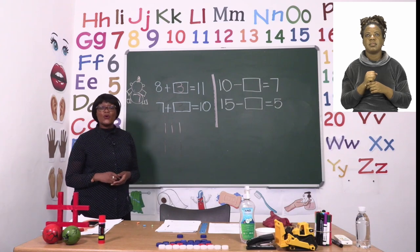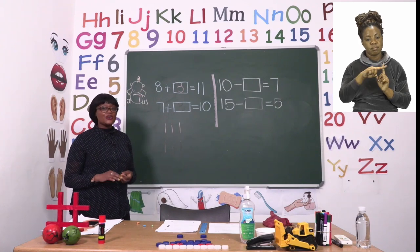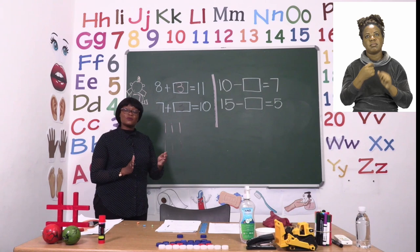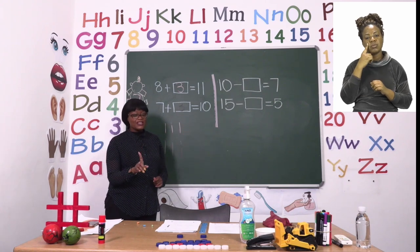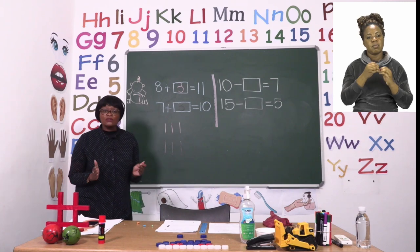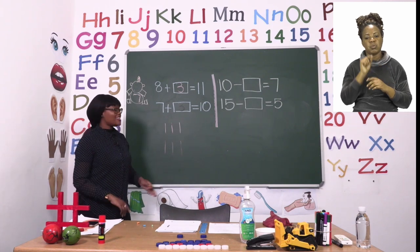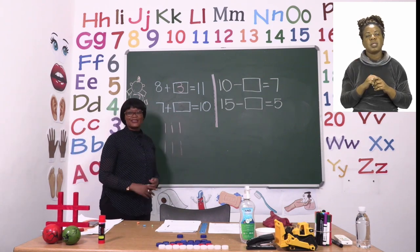Now I'd like you to do that for all the ones that you have to add. You're going to try and find the difference between the two numbers by drawing sticks. And then when you're done drawing those sticks, count them. The number you get is the number that's supposed to be in the box.